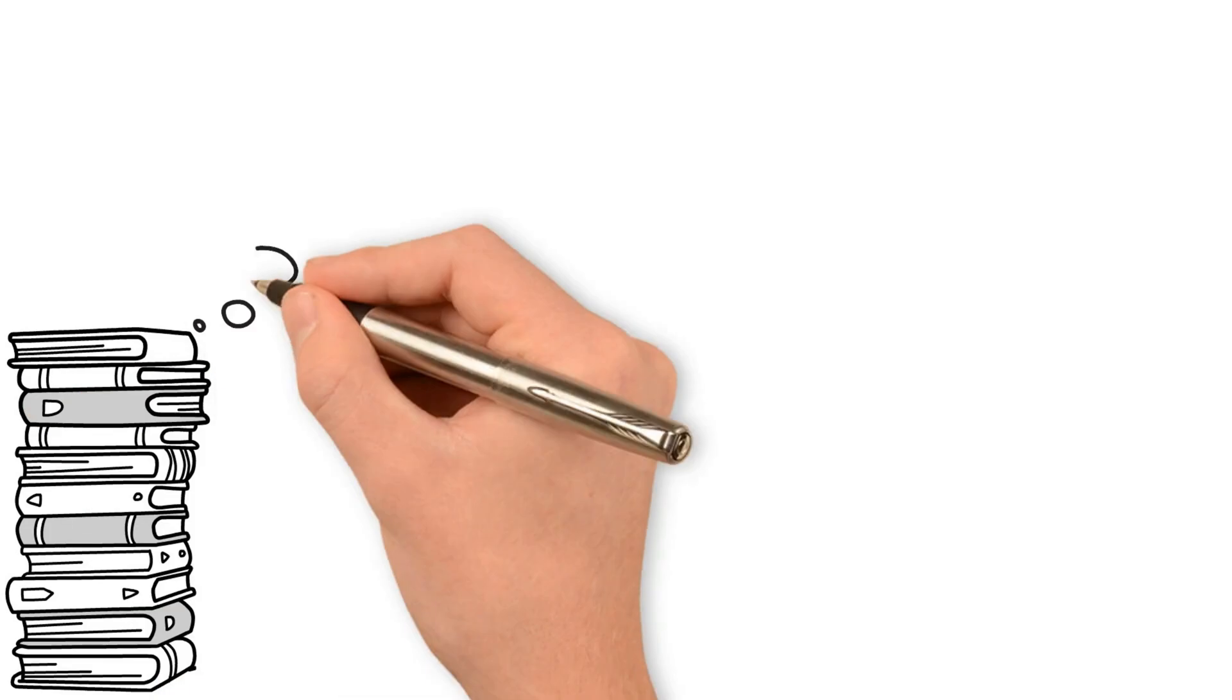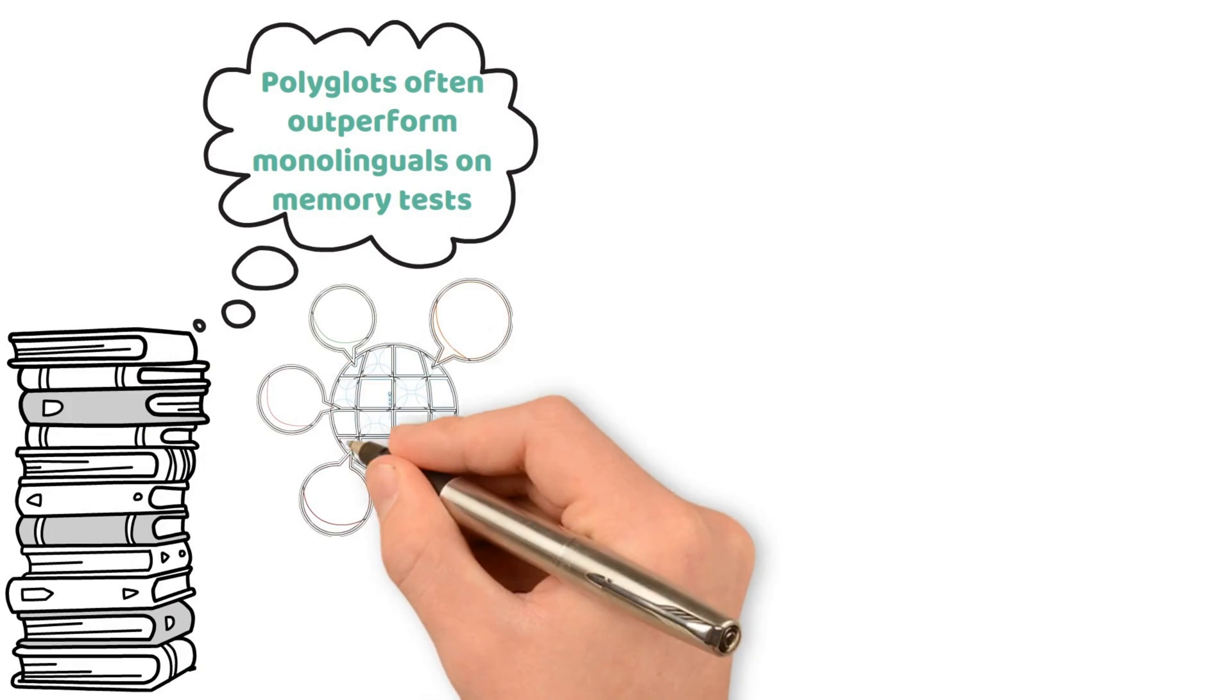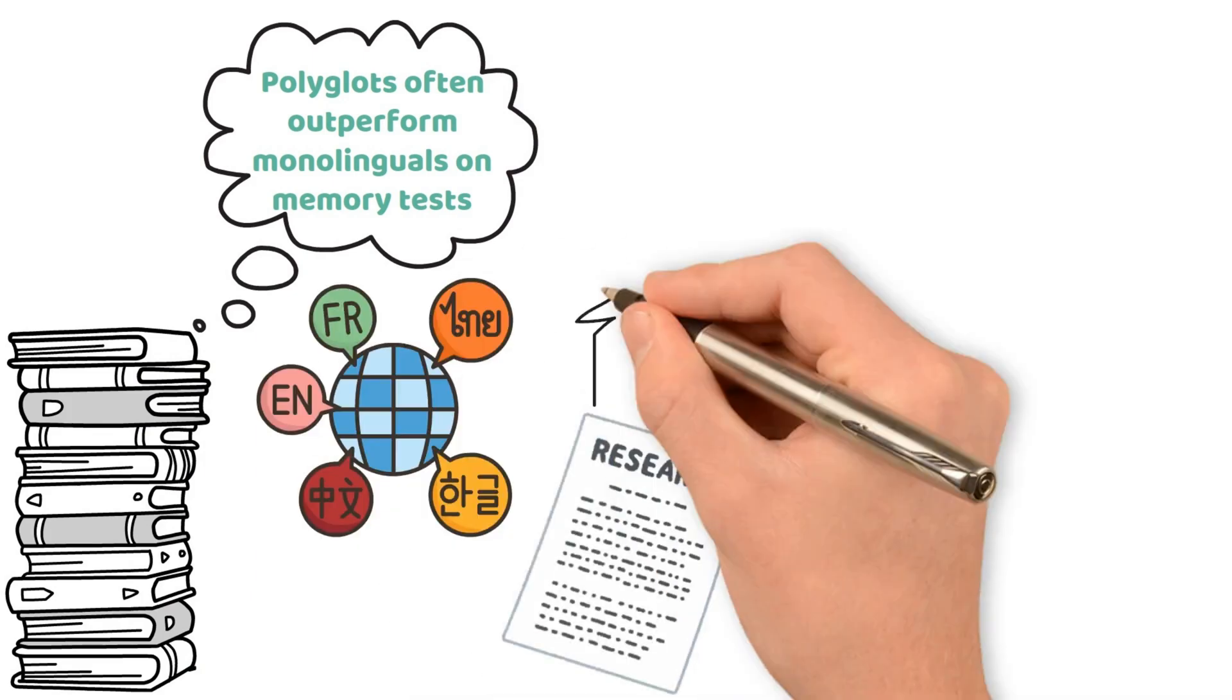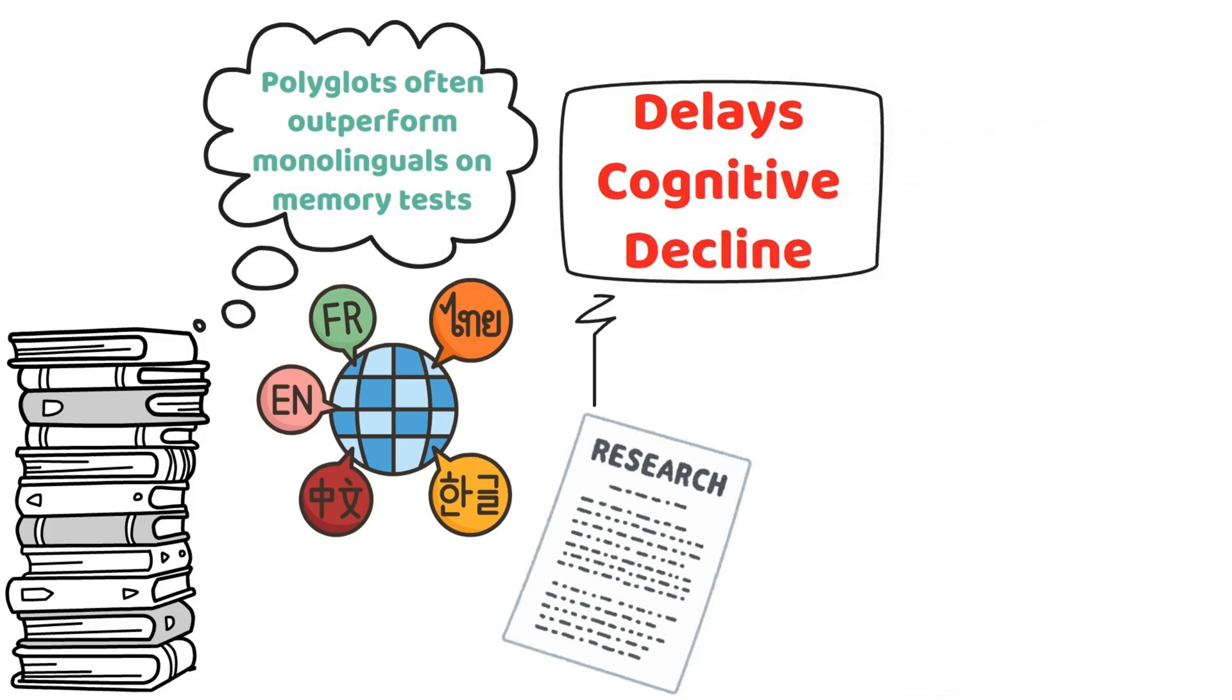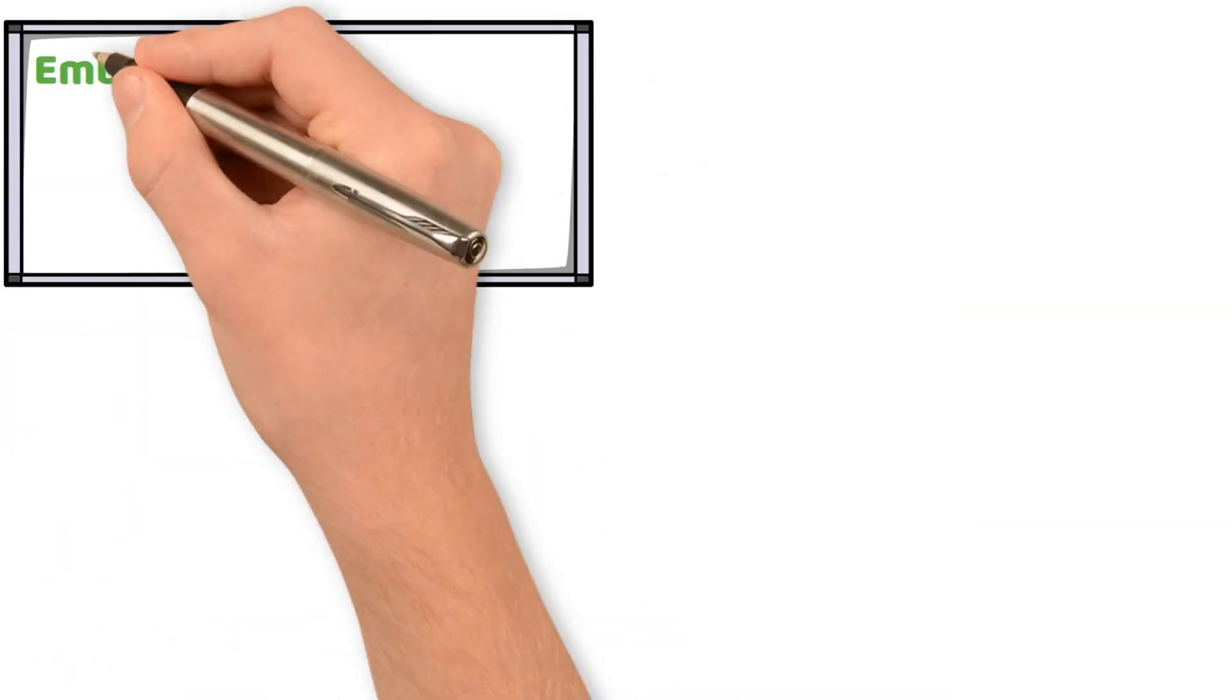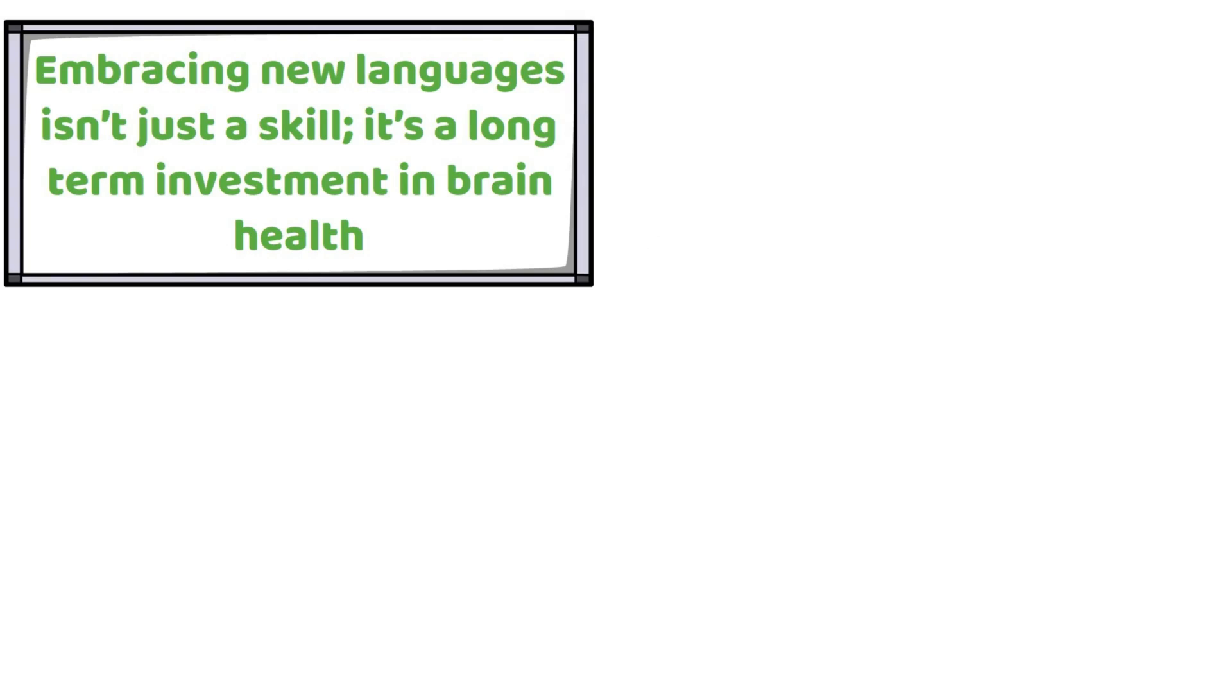Studies show that polyglots often outperform monolinguals on memory tests, as juggling multiple languages keeps the brain agile. Research has also shown that language learning delays cognitive decline, reducing the risk of Alzheimer's and other forms of dementia. Embracing new languages isn't just a skill, it's a long-term investment in brain health.